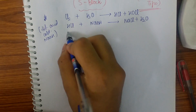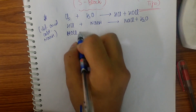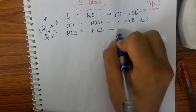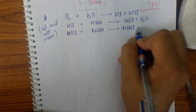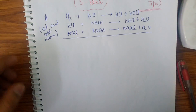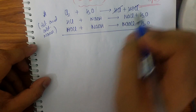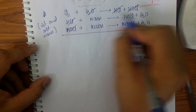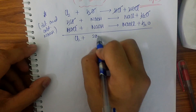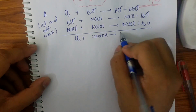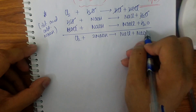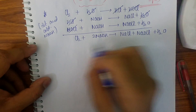HCl plus NaOH gives NaCl plus H2O. Similarly, HOCl with NaOH gives NaCl plus H2O. Adding all three equations and cancelling HCl, HOCl, and H2O, we get: Cl2 plus 2NaOH gives NaCl plus NaOCl plus H2O.